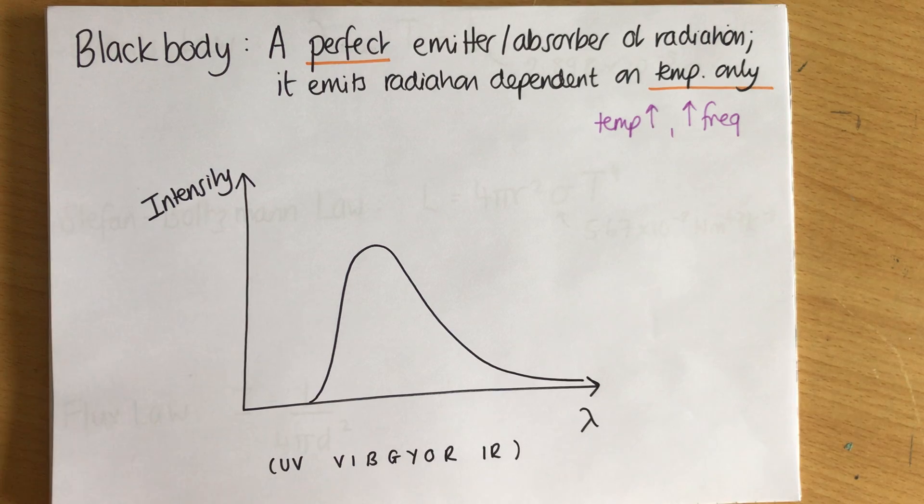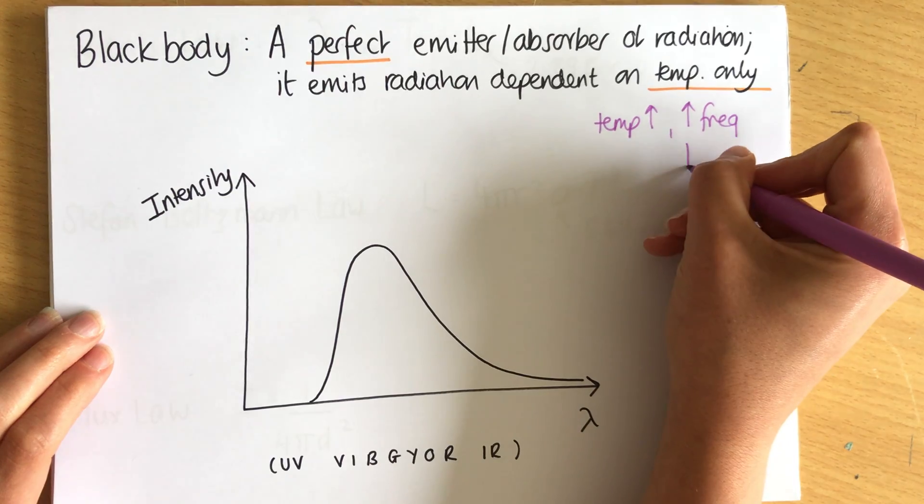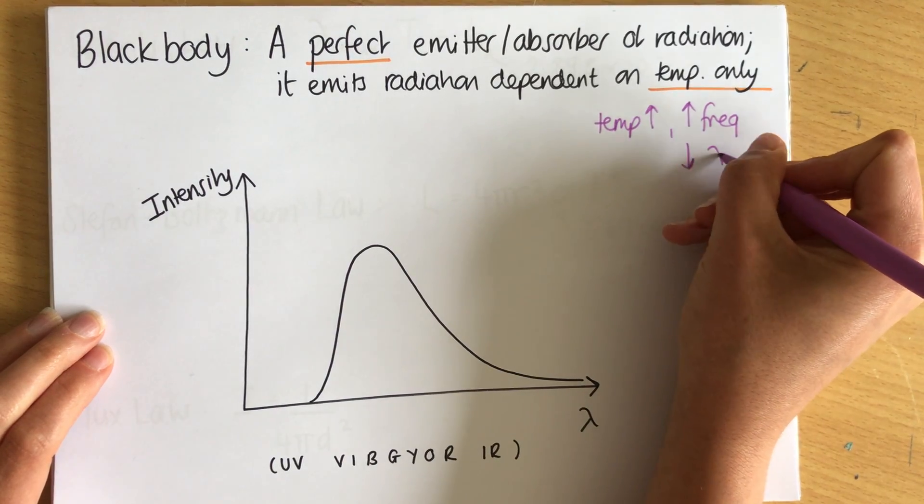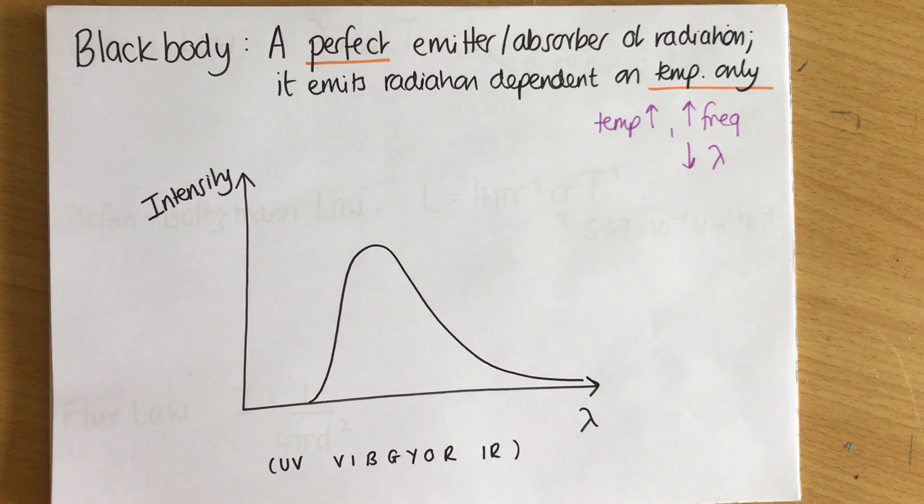So it's going from infrared radiation only to then it glows red, then it glows orange, then yellow. These have a higher frequency of radiation. And that means we are decreasing the wavelength because wavelength and frequency are inversely proportional to each other from the equation c or v equals f lambda.